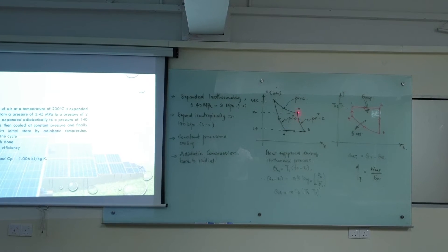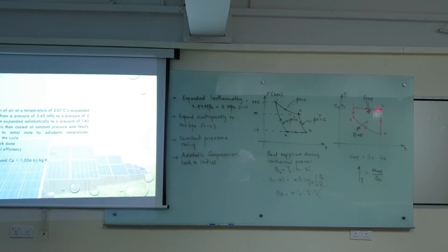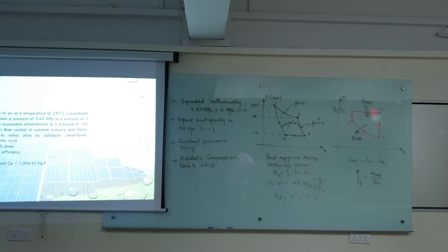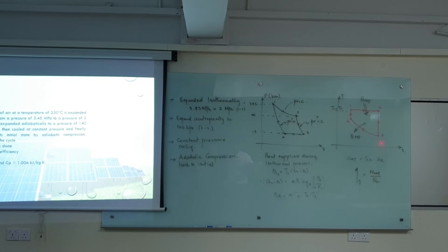Then from the PV diagram, 2 to 3 is an isentropic process. So that is 2 to 3. So that is a vertical line downwards. Expansion, so temperature drops.